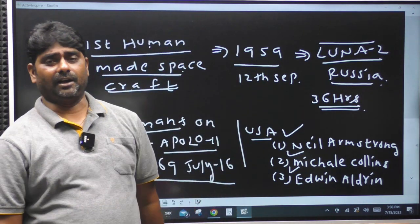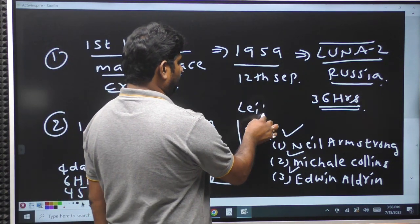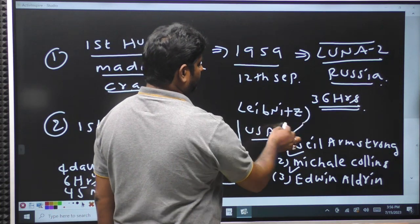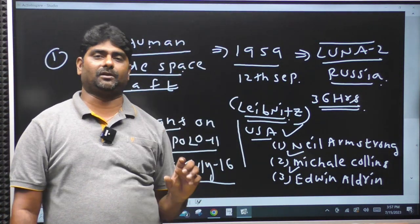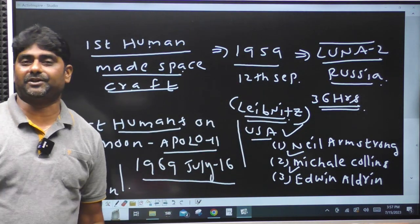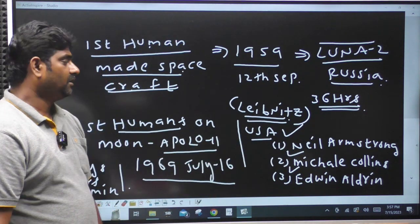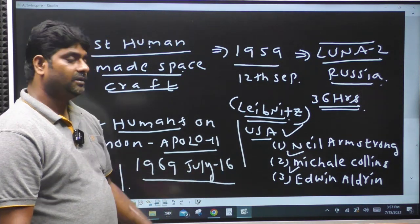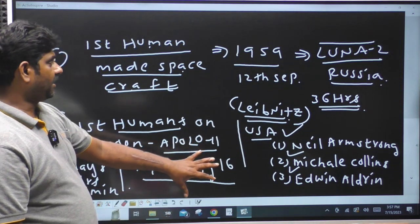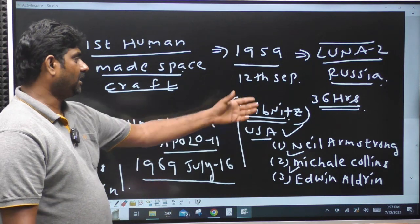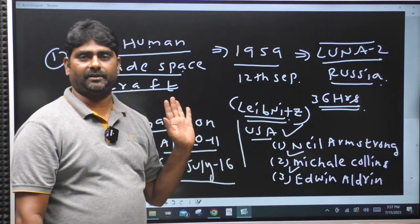The landing site was the Sea of Tranquility. America was the first country to send humans to the Moon. The three astronauts of Apollo 11 — Neil Armstrong, Michael Collins, and Edwin Aldrin Jr. — landed on July 16th. This was a human mission, not just a spacecraft.